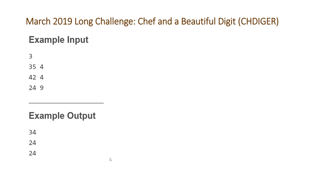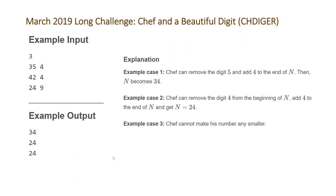CodeChef provided explanations for these transformations. For the first case, Chef removes the digit 5 and adds 4 to the end, giving us 34. For the second case, Chef removes the first digit 4 and appends the favorite digit 4, giving us 24 — essentially swapping the digits. For the third case, because the favorite digit is 9, which is greater than both 2 and 4, no modifications can improve the number, so the smallest possible value remains 24.